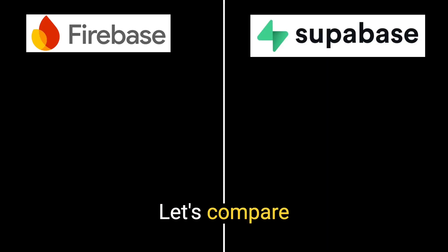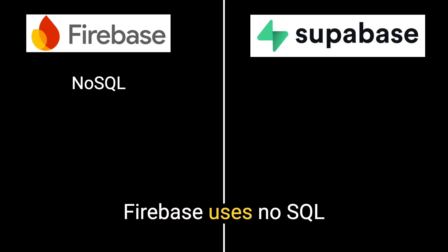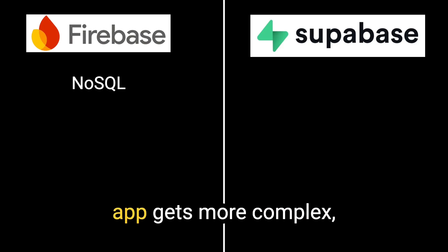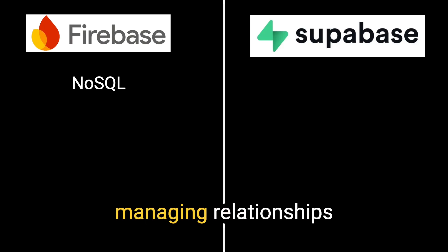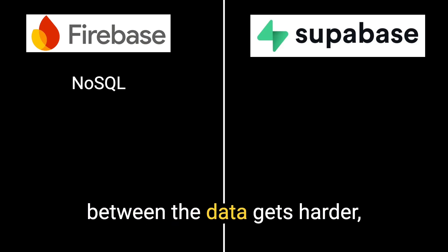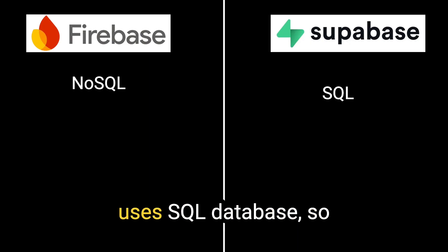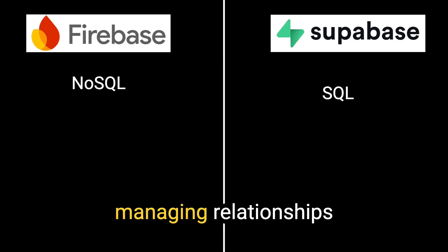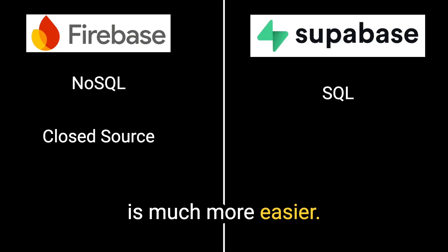Let's compare Firebase to Supabase. Firebase uses a NoSQL database, and as your app gets more complex, managing relationships between the data gets harder. Whereas Supabase uses a SQL database, so managing relationships is much easier.